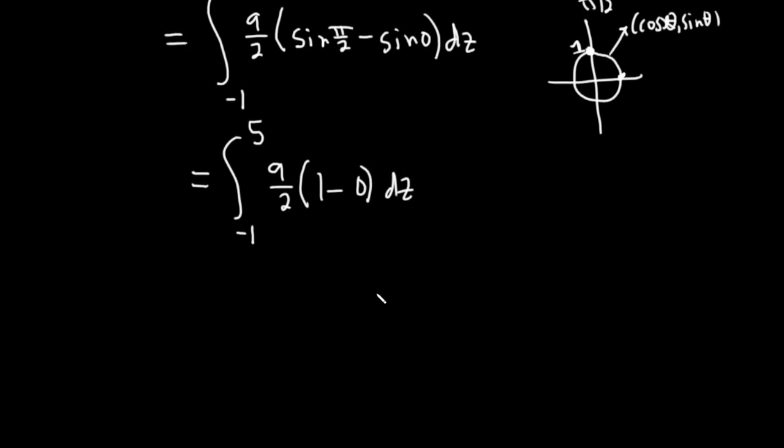All right, good stuff. Not difficult, you just have to take your time with it. So we're going from negative 1 to 5, and we just have 9 halves dz. Now we just have to integrate this with respect to z. This is a constant, so it'll just be 9 halves z. And we're going from negative 1 to 5.